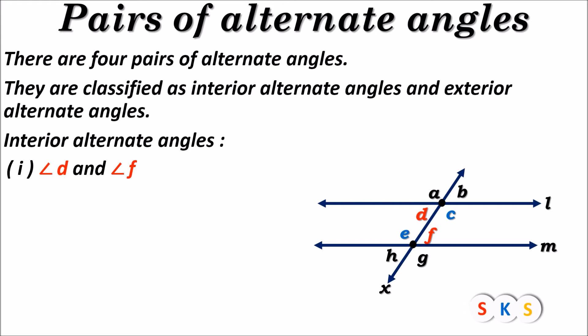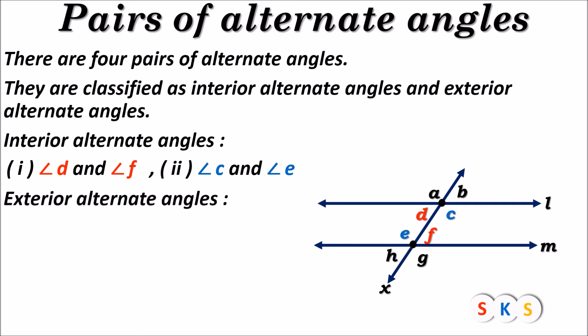You can see that those two angles are also inside the parallel lines and they are cross angles. Now, we will see exterior alternate angles. The word 'exterior' means outside the parallel lines. In this figure, there are four angles outside of these two parallel lines: they are angle A, angle B, angle G, and angle H.